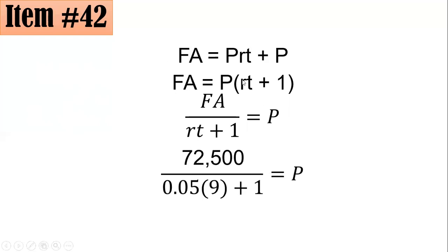By substitution now, your final amount was 72,500. The rate that was invested is 5%, which when converted to decimals is 0.05 times the time, which is 9 years plus 1, and this simplifies to 50,000 pesos. Hence, the amount of investment was 50,000 pesos. D is the correct answer.